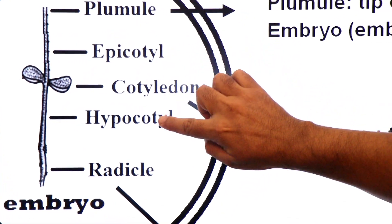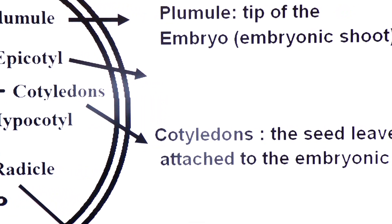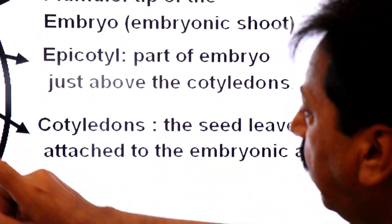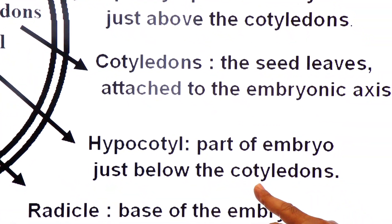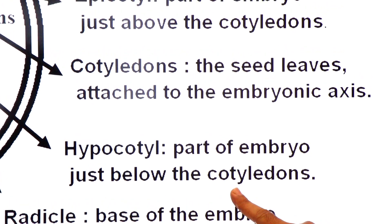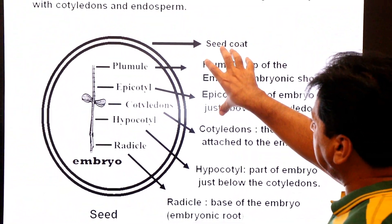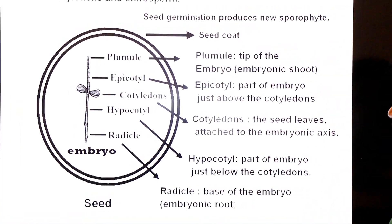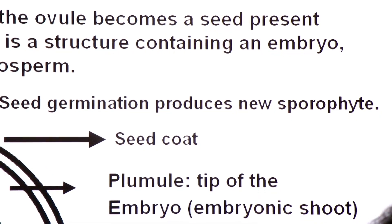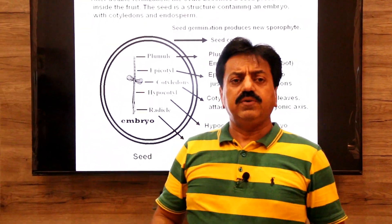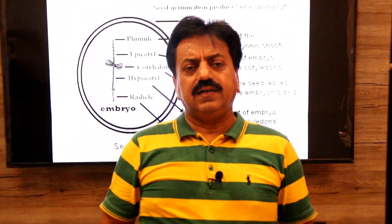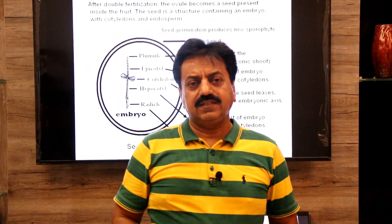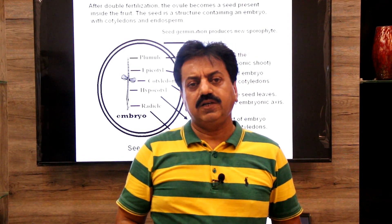The part of the embryo just above the cotyledons is called epicotyl, and the part just below the cotyledons is called hypocotyl. When the seed germinates, a new sporophyte is produced. We have completed the characteristic features of angiosperms. In the next lecture, I will discuss the life cycle of angiosperms. Thank you dear students.